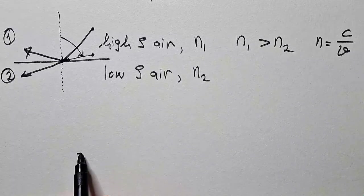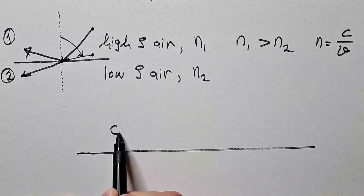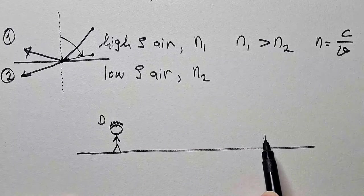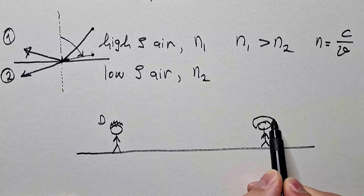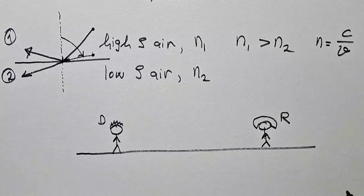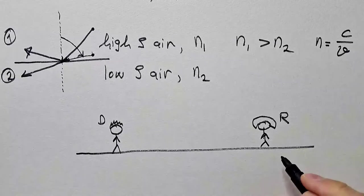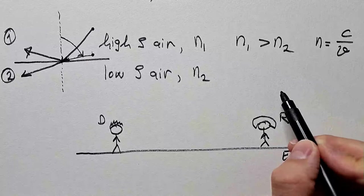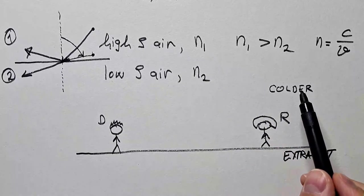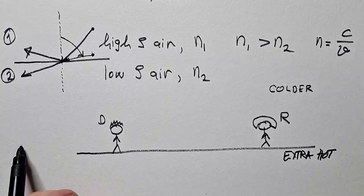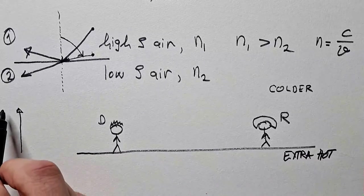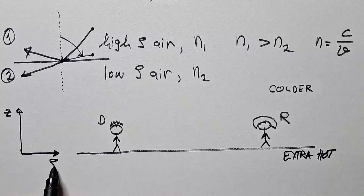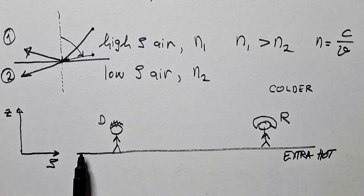Now, when we understand this, and we have knowledge of what I explained above of autoconvective temperature lapse rate, let's explain mirage. Here is surface of Earth. Here is a person, let's call that person D. And some distance away is another person, let's call that person R. It's a very, very sunny day, so the surface of the Earth is extra hot. Relative to the surface of the Earth and the air right above the surface, somewhere here above, air is colder. I say colder because it's not cold, it's just colder in respect to what is very close to the surface.